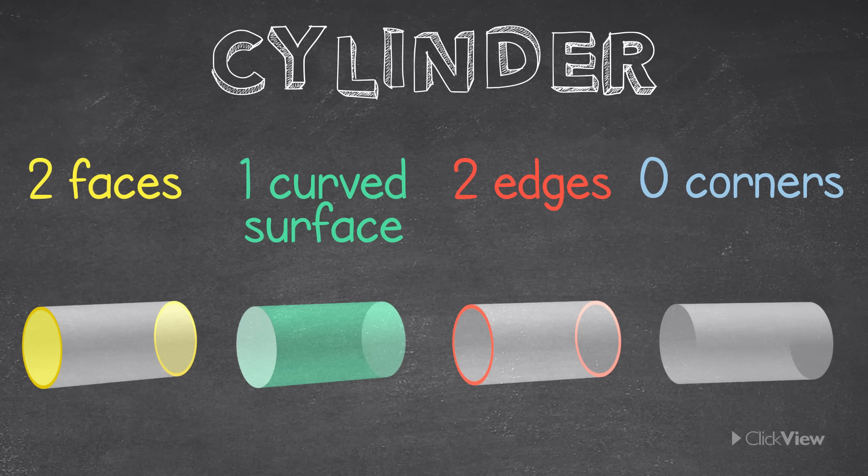Remember, a corner is where 2 or more edges meet. In a cylinder, there are no corners because its 2 edges do not meet.